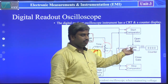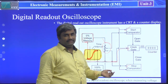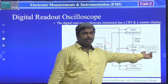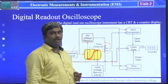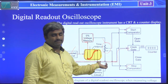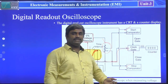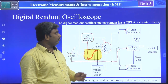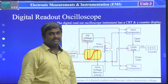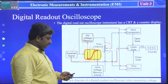Whenever the gate is opened, it will send information. The digital CRO consists of a CRT display and a counter. The counter shows how many samples have been displayed in the section. Basically, the digital readout oscilloscope has a CRT and a counter display.